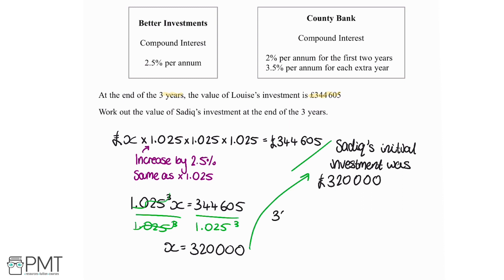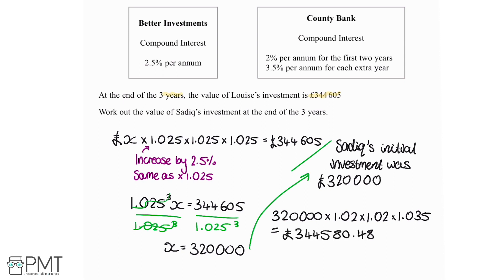Sadiq had £320,000 to start with. For the first two years we multiply by 1.02, and we do that for two years so we multiply by 1.02 again. Then for the third year it goes up to 3.5%, so that's multiplying by 1.035. We're increasing by 2% so it's 1.02, and increasing by 3.5% so it's 1.035. Putting this into the calculator, the value is £344,580.48, which is our final answer.